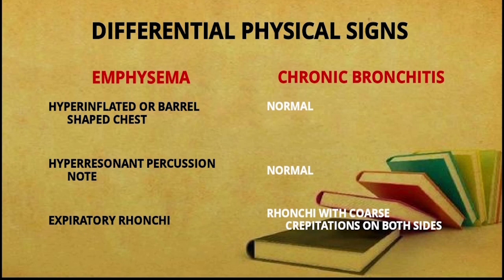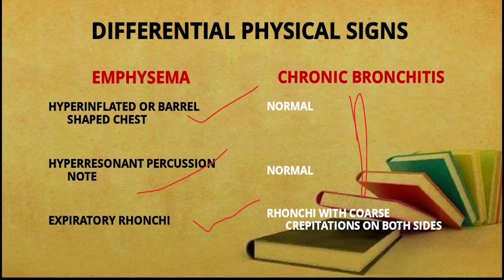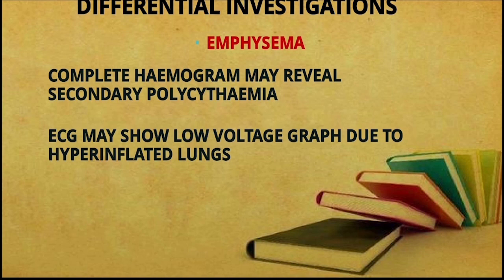Differential physical signs: in emphysema there is a barrel-shaped chest and a hyper-resonant percussion note. In chronic bronchitis, percussion is normal, but there will be rhonchi and coarse crepitations on both sides.